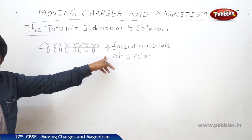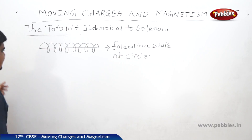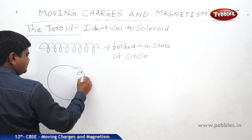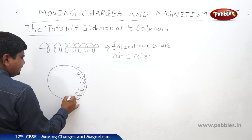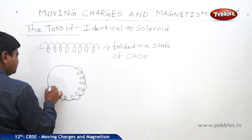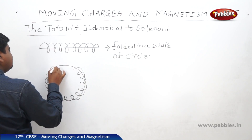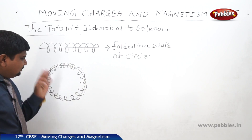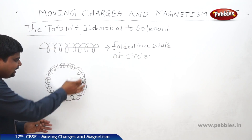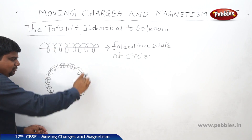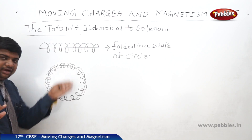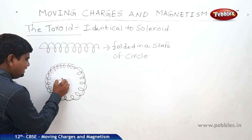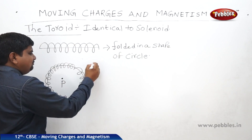The whole solenoid structure is lengthy, and when it is bent into a circular shape, we get the toroid. A toroid is a hollow metallic ring on which one metallic wire is wound in a circular shape, modeled on the solenoid structure. Inside or exterior of the toroid, the magnetic field is zero.